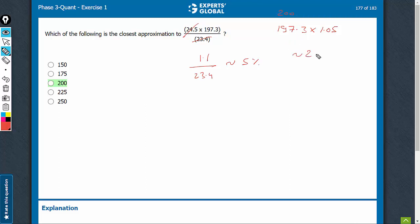The approximate value should be around 207 or so, and the closest value is 200 by a good margin. That's the right answer.